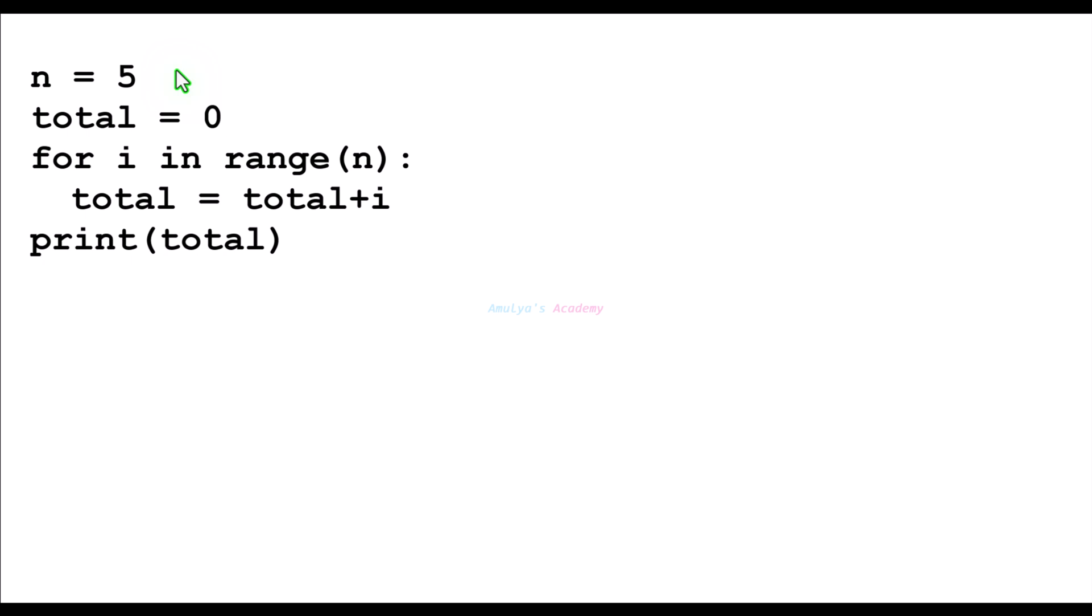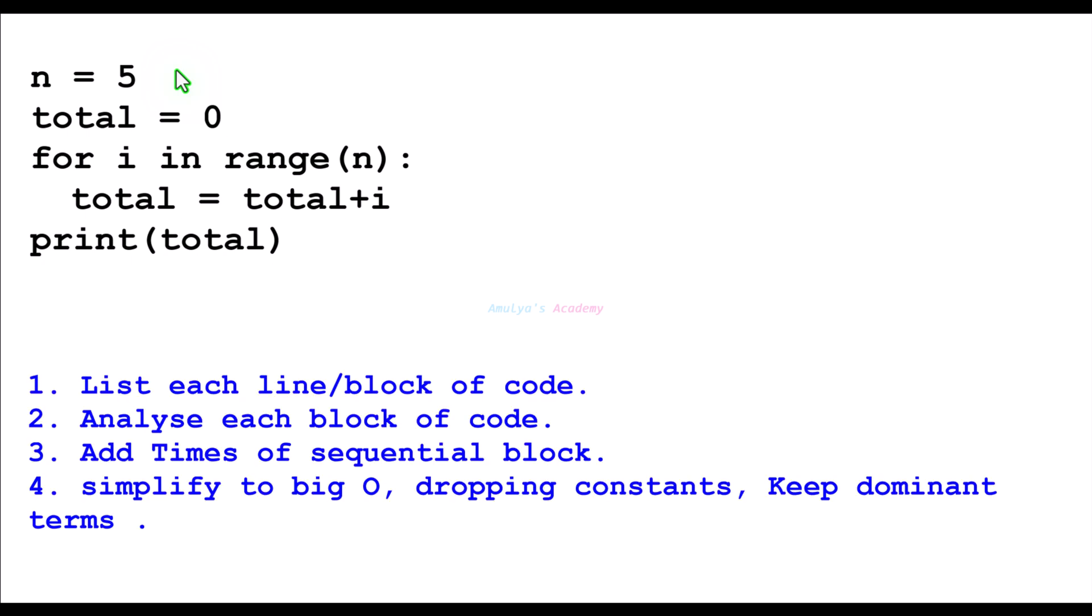To calculate the time complexity, first list each line or block of code. Next, analyze each block of the code, then add times of sequential blocks, and then keep the dominant terms, ignoring constant terms and lower order terms.